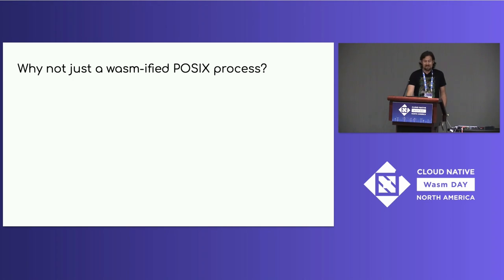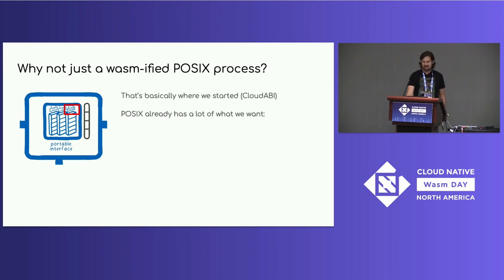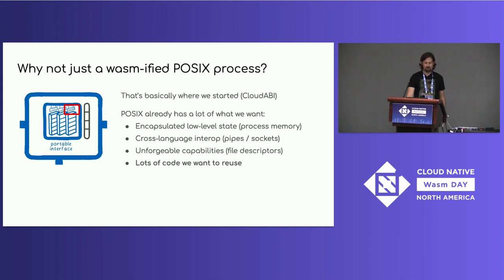A reasonable reply is: why not just use a WASMified POSIX process? Indeed, if you look at the picture it says POSIX because that's where we started — we started with cloud ABI. POSIX has a lot of what we want: encapsulated low-level state, cross-language interop, unforgeable capabilities, and lots of code that we want to reuse.